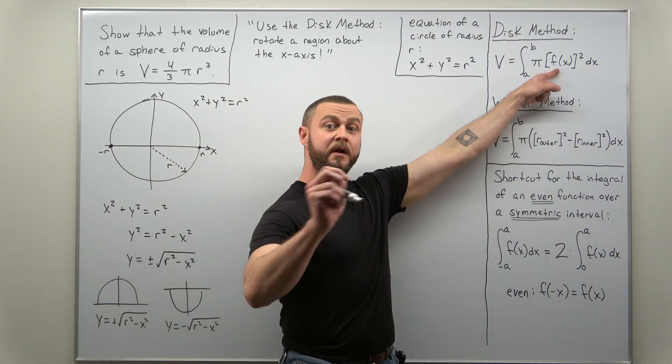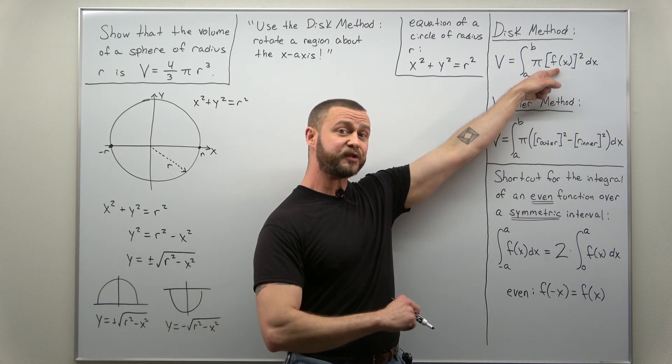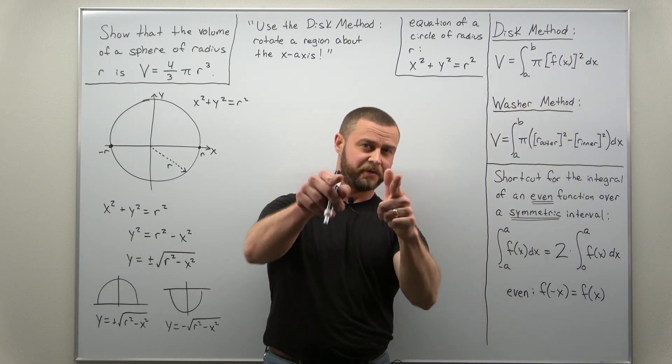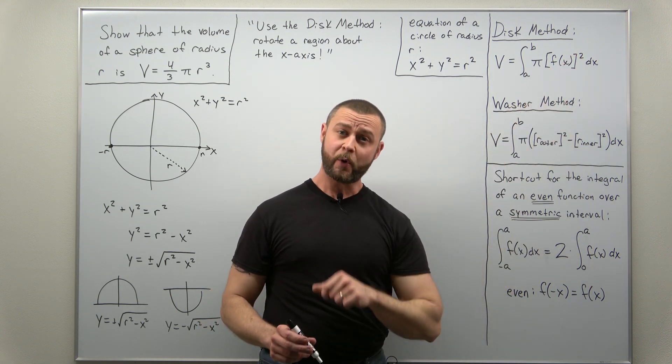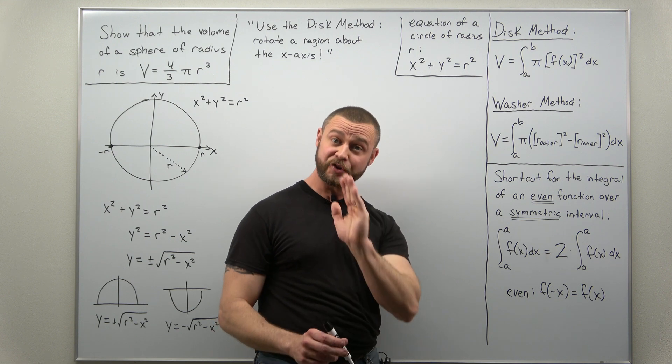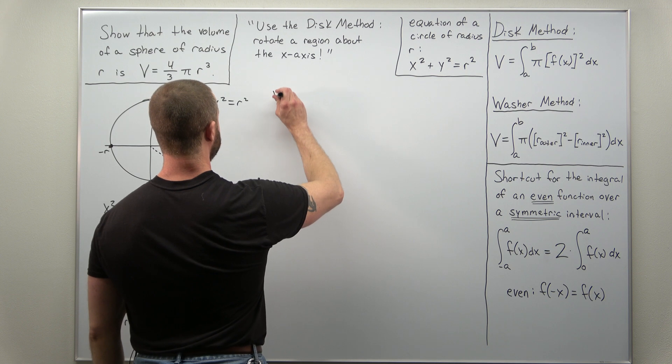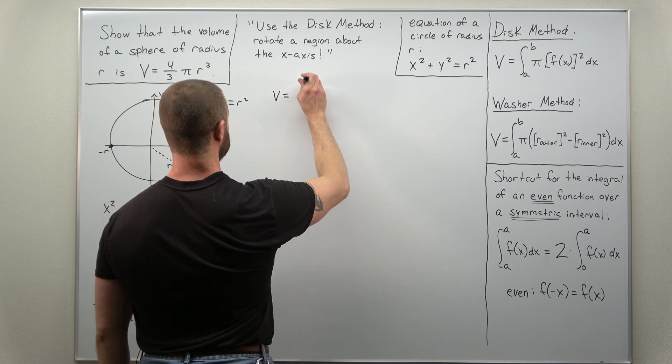And we're going to use that in the formula here, which is nice because that has a square root in it. The formula for the disk method has a square, those are going to cancel out so our integral once we've set it up should look rather simple. So let's plug everything in.